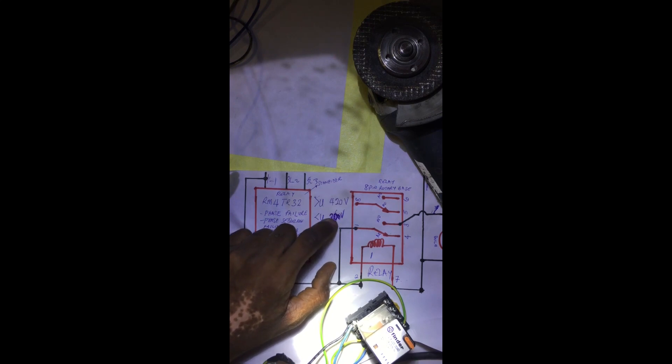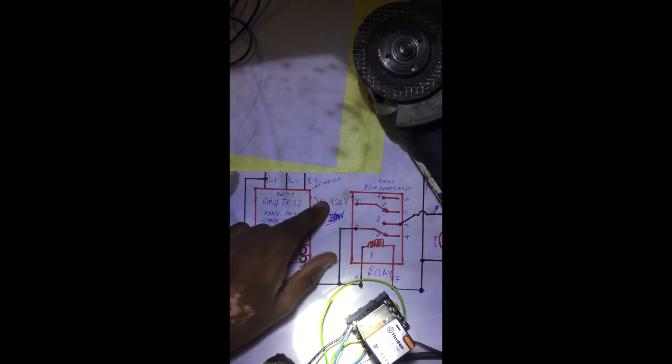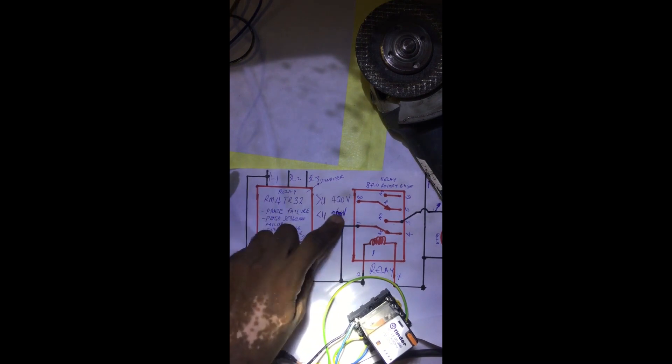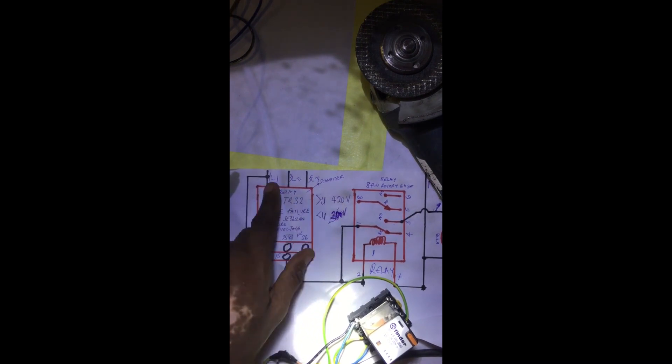You may also decide that your equipment cannot take anything above 400. You can also set this upper threshold as it pleases you. Once these parameters are met and the phase sequence is in order - red, yellow, and blue in order - and the voltages are right, the upper and lower limits are there, this relay will conduct.